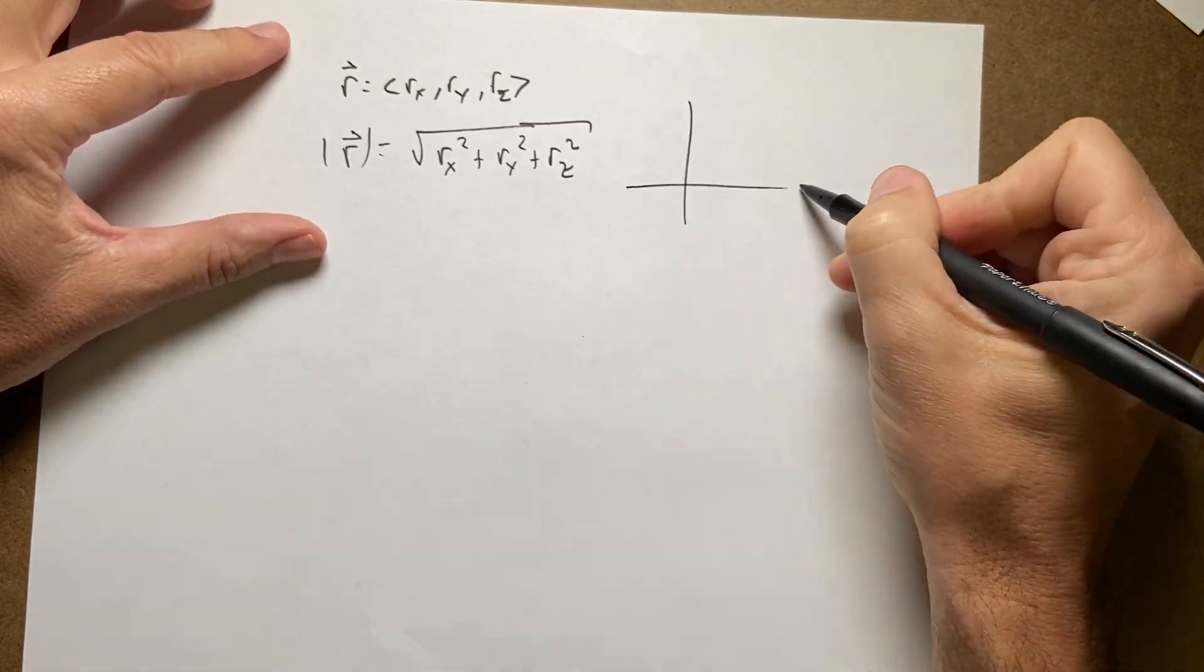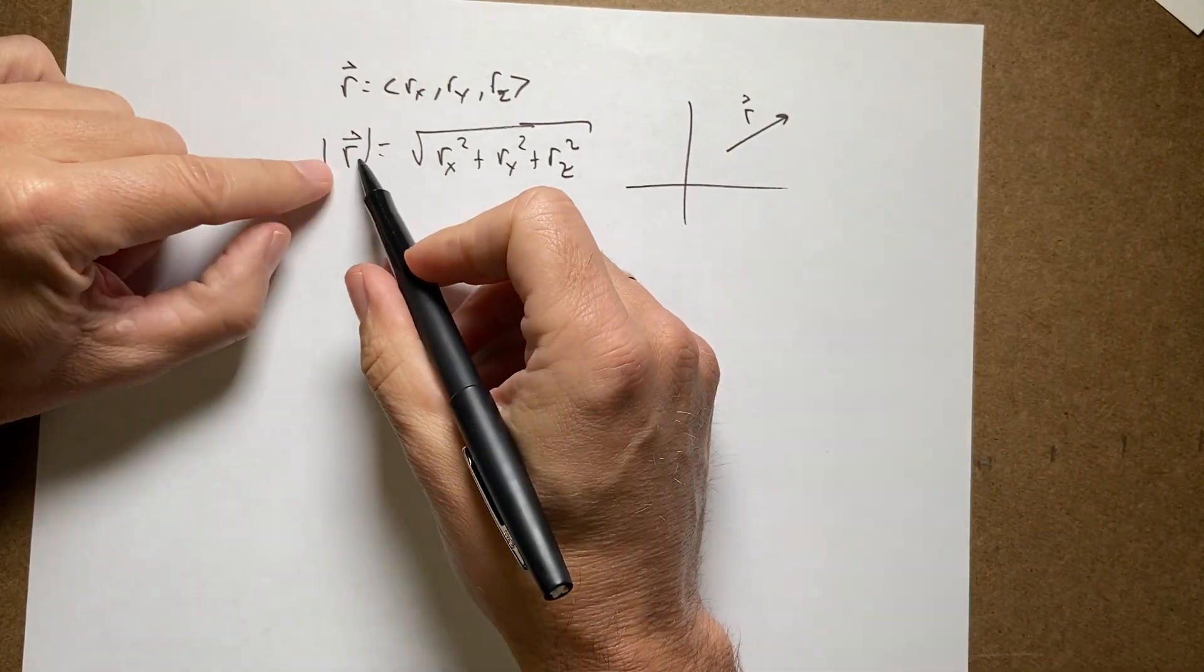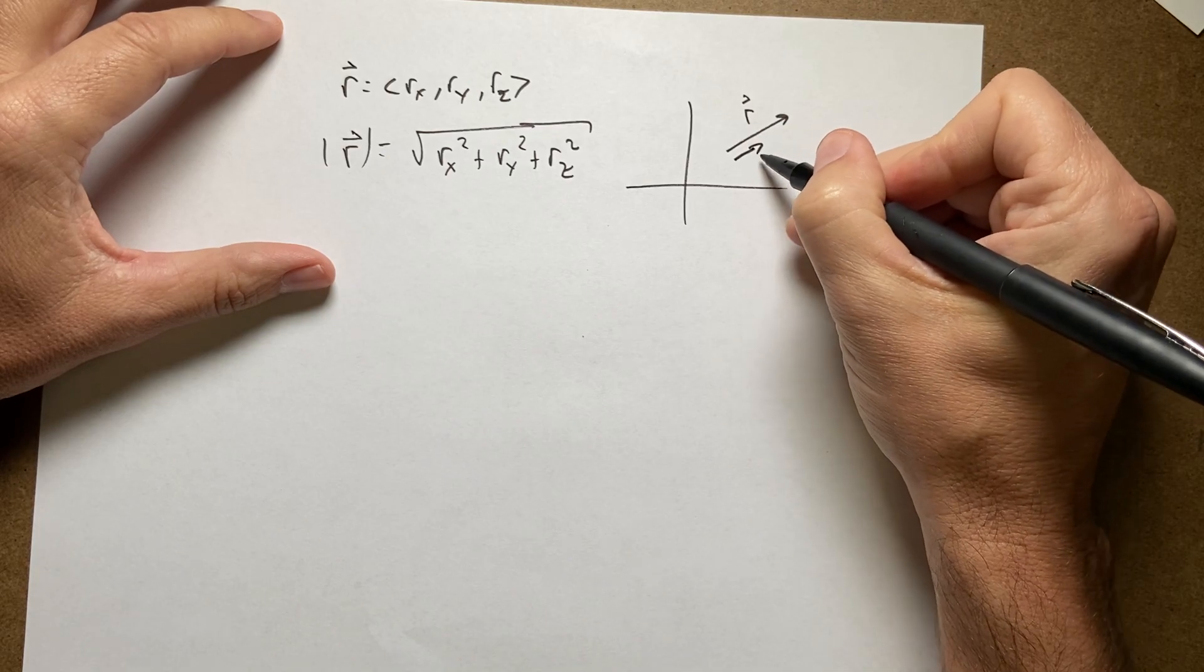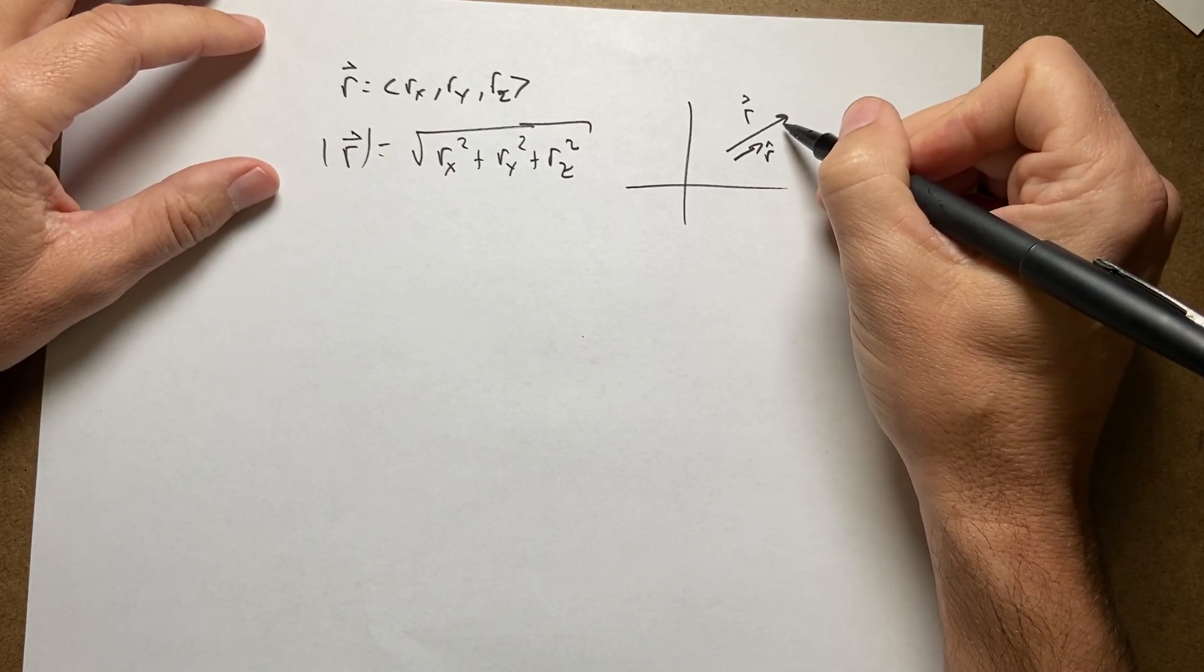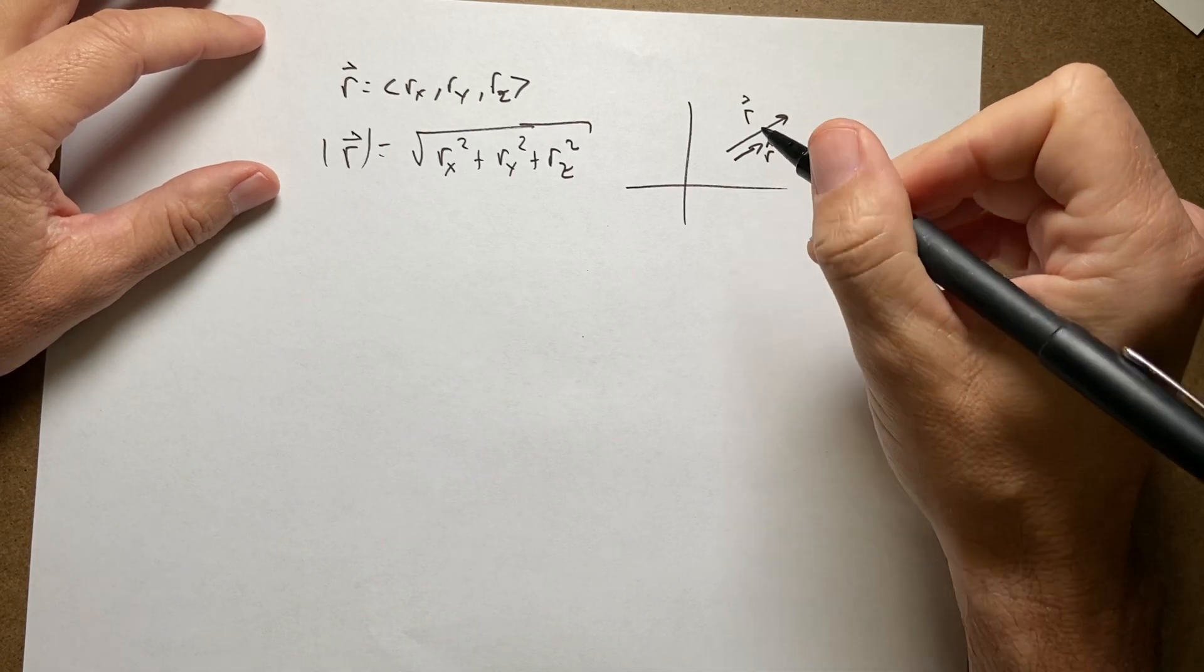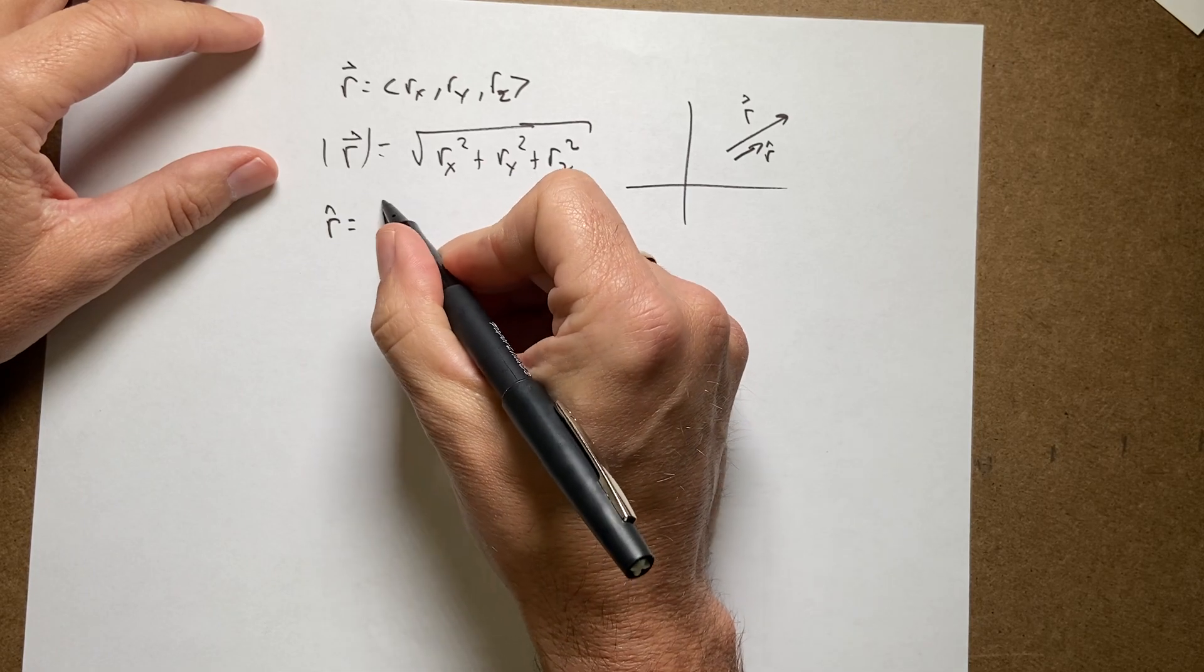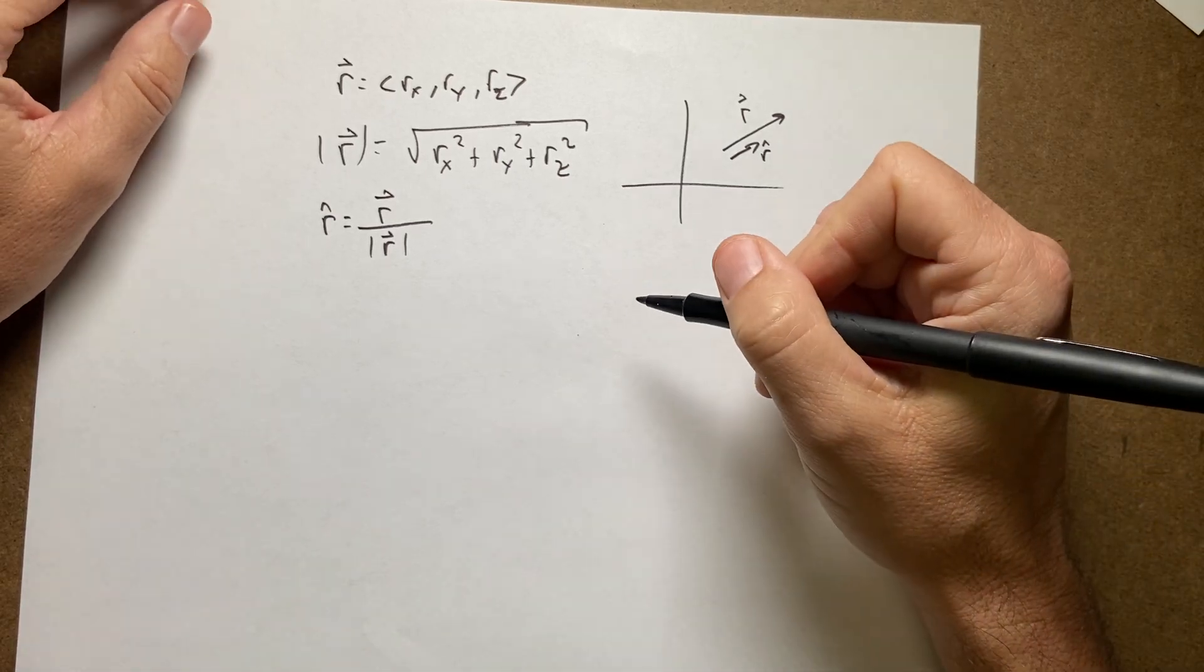If I have my vector r, I'm just using r because it's useful. The magnitude we represent with these absolute value signs. But there's another vector here called r hat. r hat is a vector in the same direction as r but it has a magnitude of 1. So r hat, called the unit vector, is going to be the vector r divided by the magnitude of vector r. And that's useful.